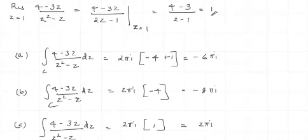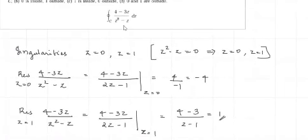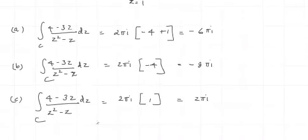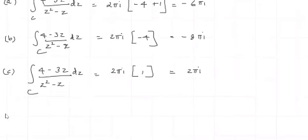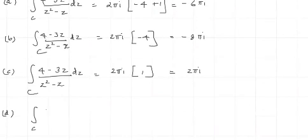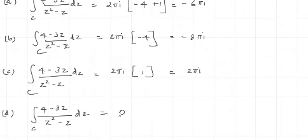For Part D, both 0 and 1 are outside the curve. When 0 and 1 are outside, there is no singularity inside the curve. Hence the integral of (4 − 3Z) / (Z² − Z) dZ equals 0 by Cauchy's Integral Theorem, since there are no singularities inside the curve.